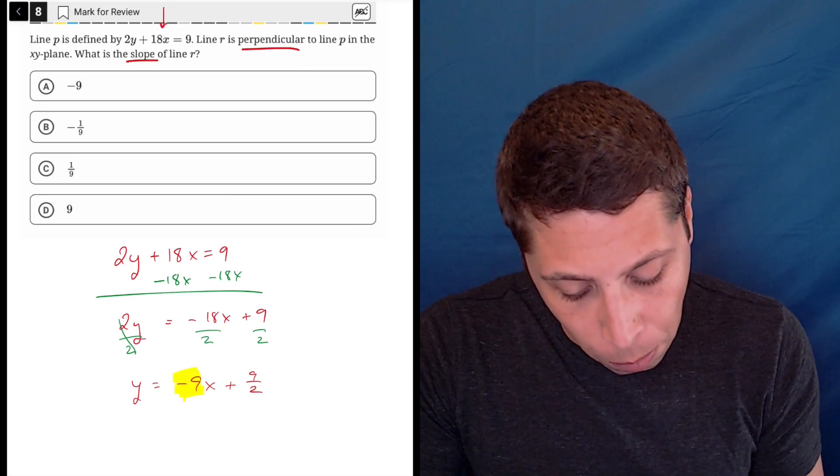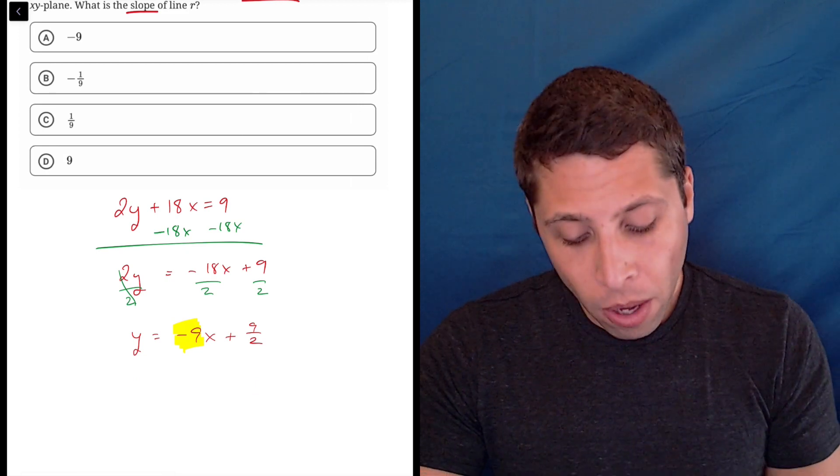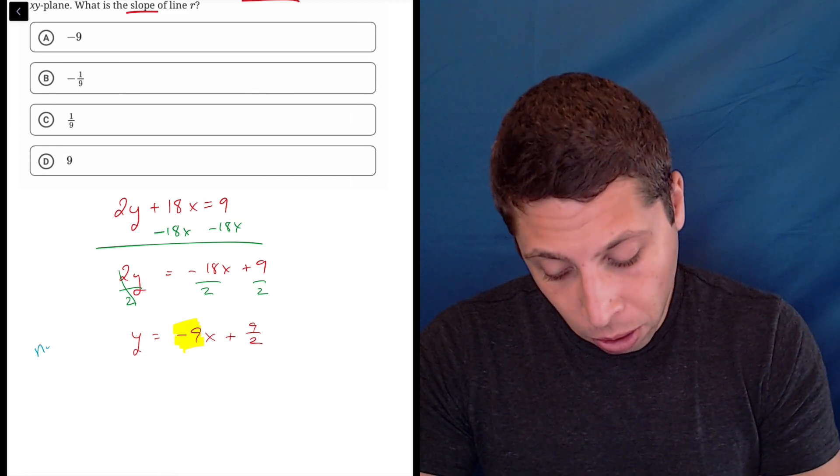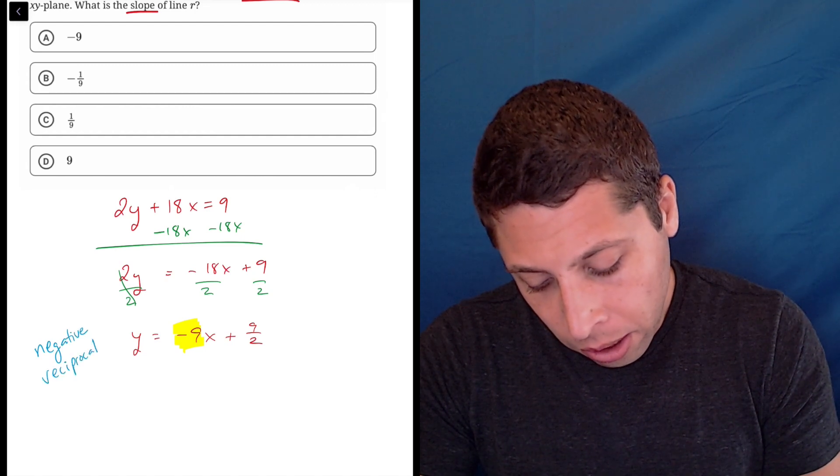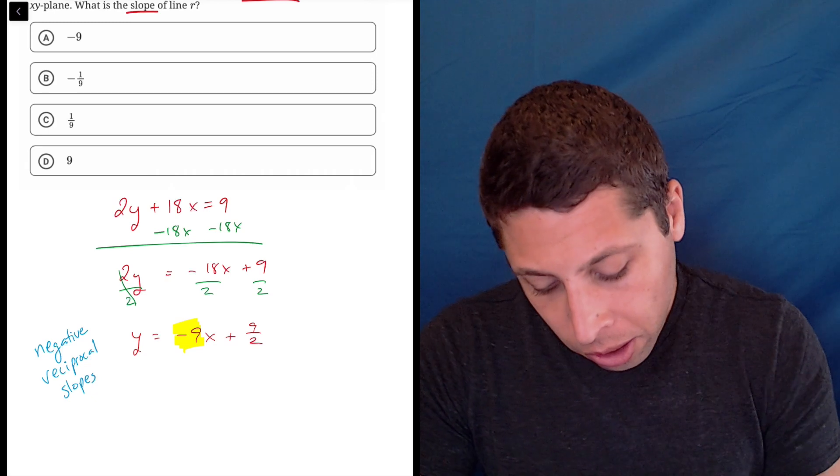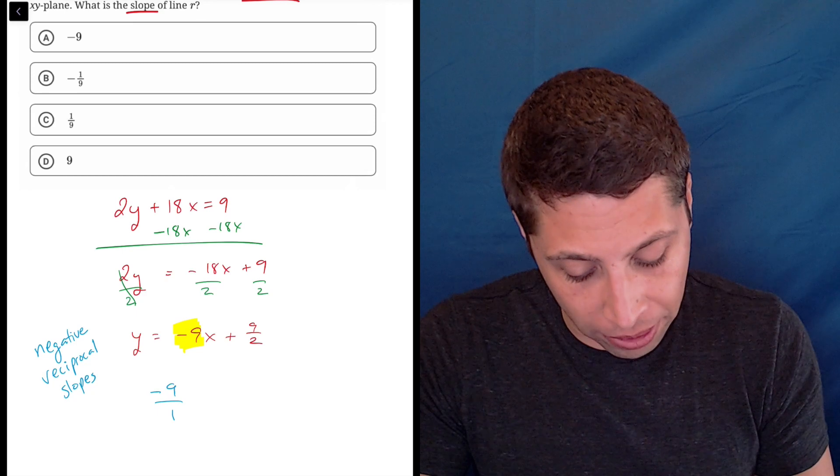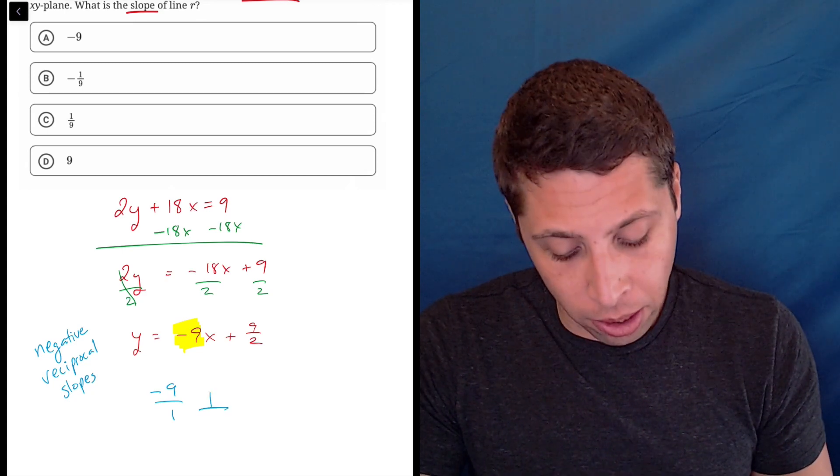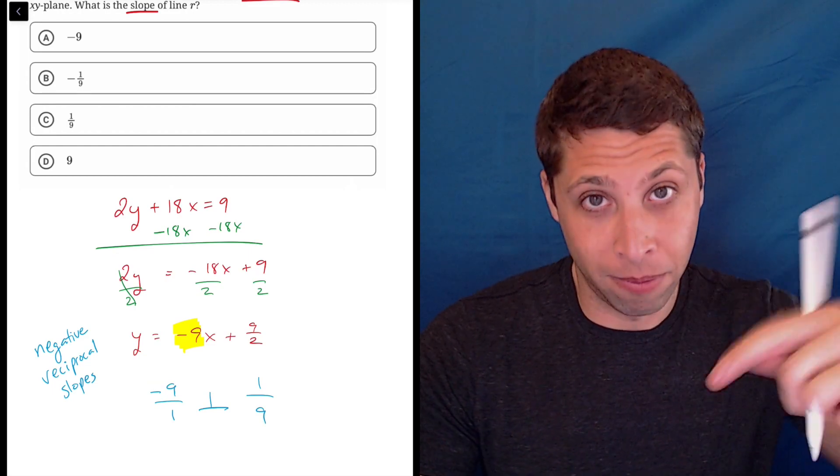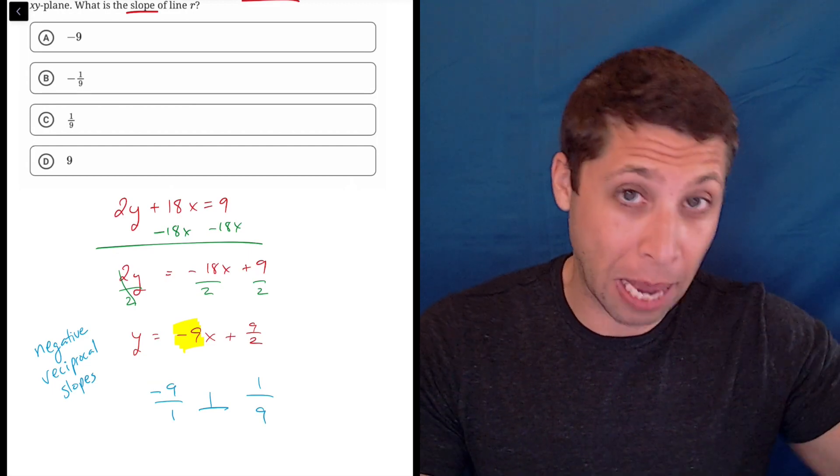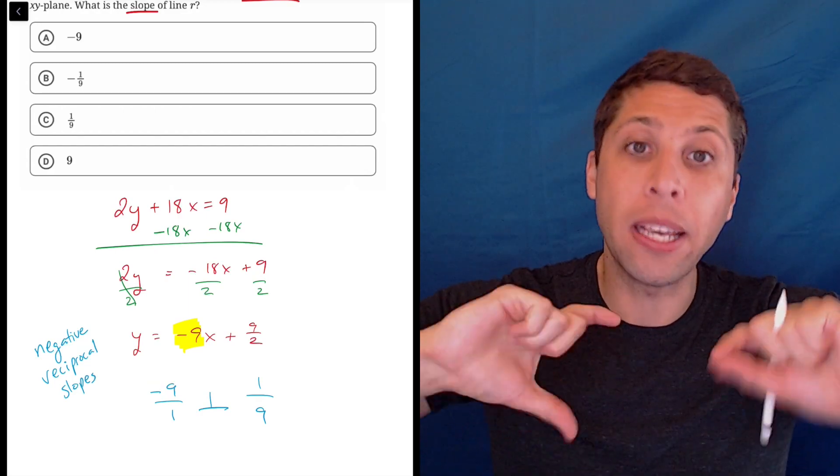So we have negative 9x plus, I'll just leave it as 9 halves. The only thing we care about for perpendicular lines is the slope. So the rule is this: perpendicular lines have what are called negative reciprocal slopes. So the slope of negative 9 over 1, I'm going to put it over 1 to make it a fraction, is perpendicular—flip it and reverse the sign. So negative means negate what you have so that negative became a positive, and then reciprocal means flip the fraction upside down. So 9 over 1 becomes 1 over 9.